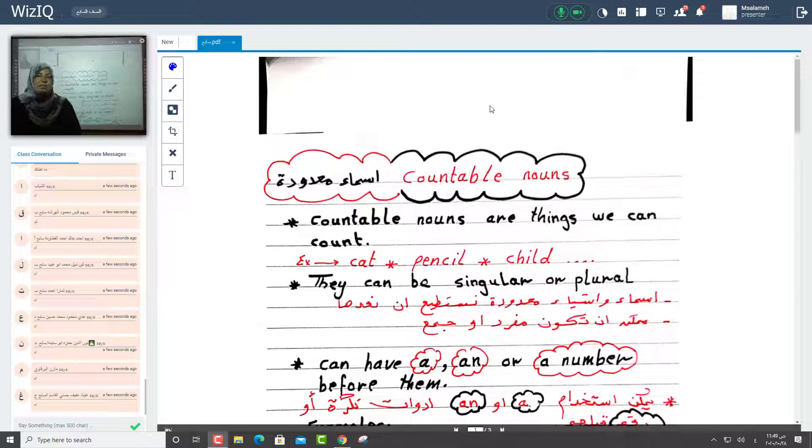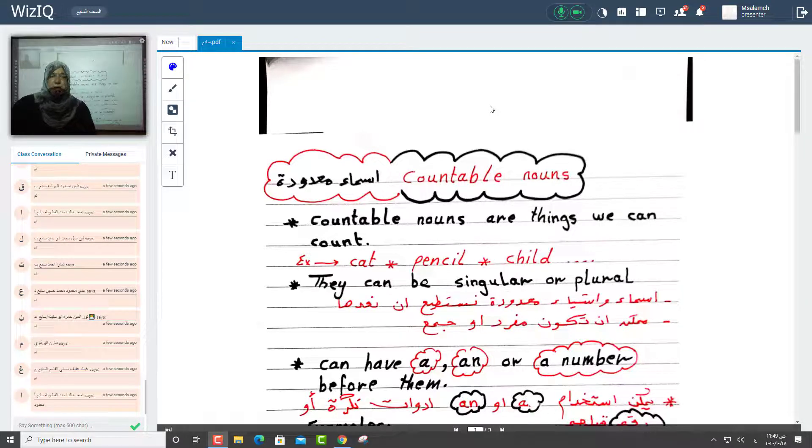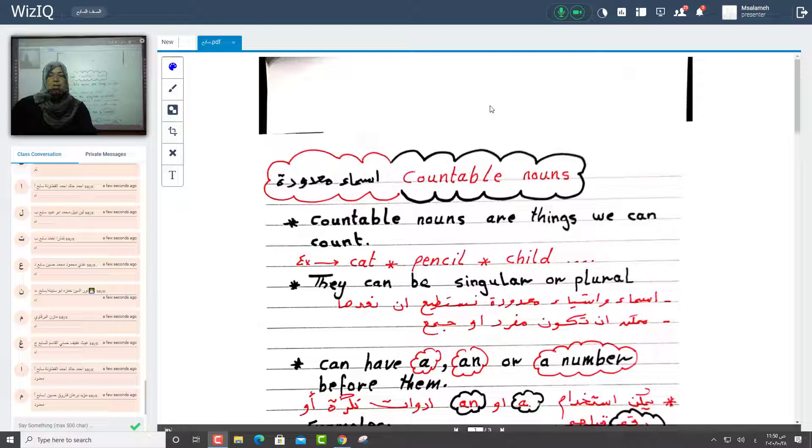Countable like book, car, door, bin, pencil, things that we can count them. We can count them. They can be plural or singular.